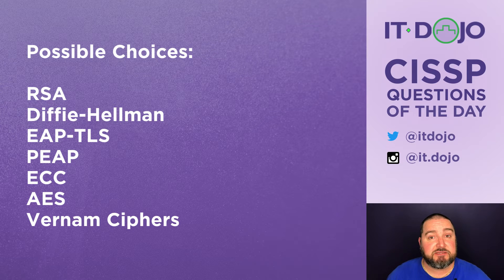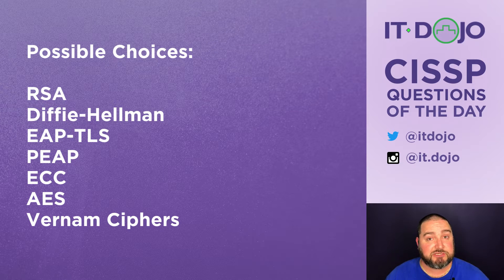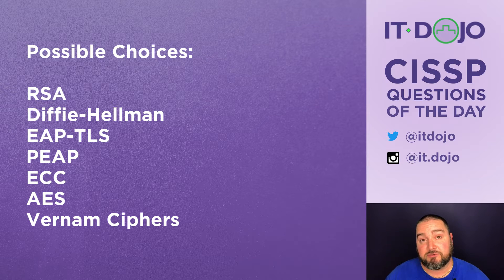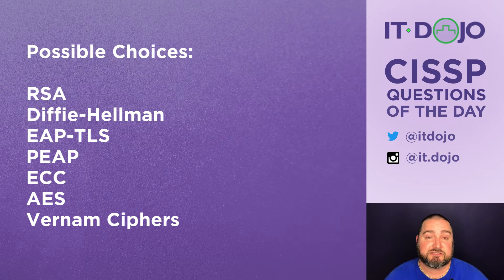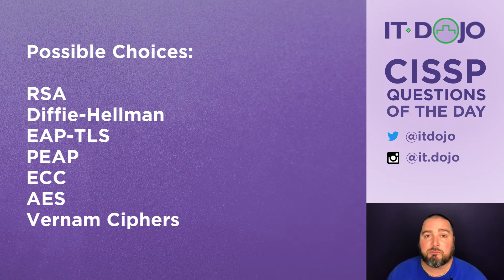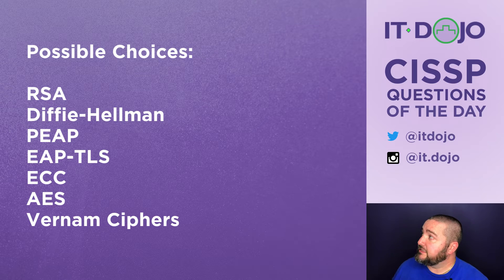Next up is Diffie-Hellman key exchange. While key generation for Diffie-Hellman is actually quite fast — which is why it's used for generating ephemeral keys — it's not used for any actual encryption processes. It's really involved in the key exchange process, so again, not really what we're looking for here.